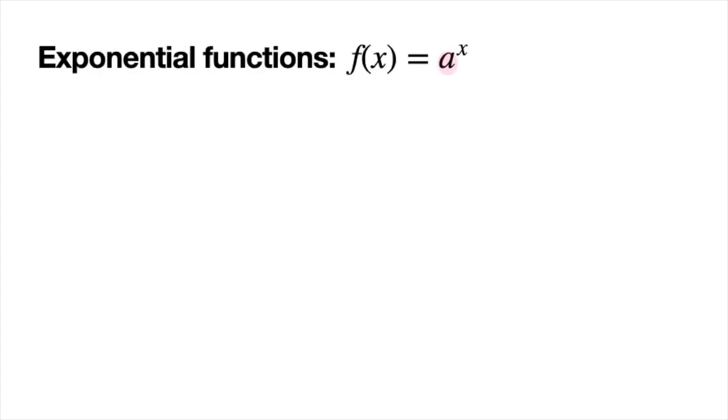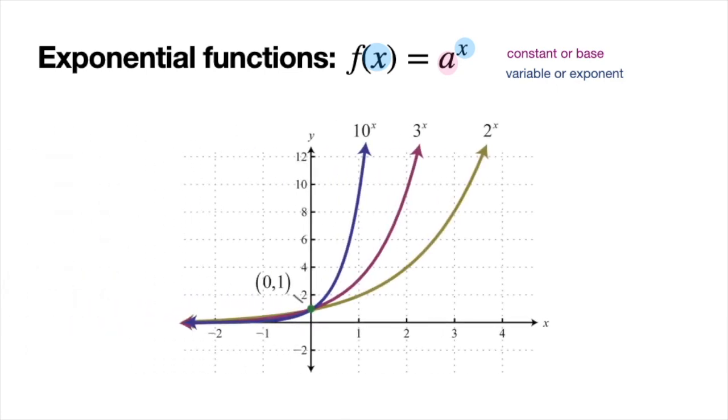Exponential functions. This a here again is a constant, but in this form it's sometimes also referred to as a base. And then again, our x is our variable. And in this form, it's also referred to as our exponent. And the bigger your a is, the faster your function is going to increase or get bigger. So you can see here, 2 to the x compared to 10 to the x, they change very differently, but they still have similar shapes. And anything to the power of 0 is 1. That's why they all go through the point 0, 1.